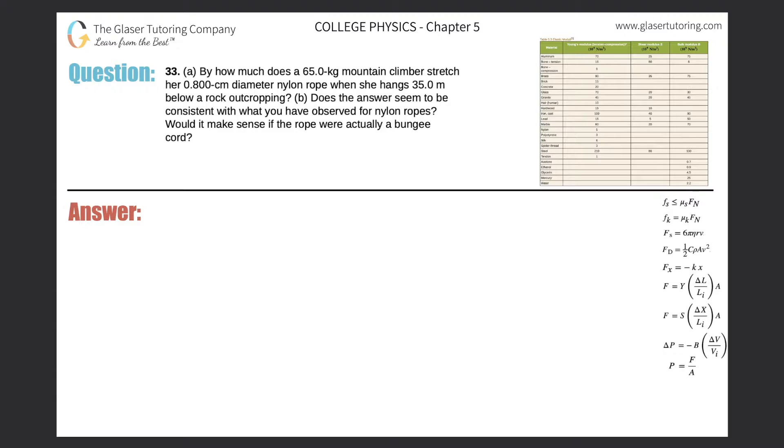Number 33, letter A. By how much does a 65 kilogram mountain climber stretch her 0.8 centimeter diameter nylon rope when she hangs 35 meters below a rock outcropping? All right, so first let's draw a simple free body diagram.